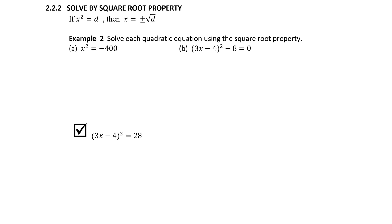One of our easiest and most efficient methods for solving a quadratic equation is found in section 2.2.2: Solve by Square Root Property. This method is fast, it's efficient, it's simple—you're going to love it. The bad news is it doesn't work on every quadratic equation; it only works on a certain subset of quadratic equations that have a special form, but when you notice this form, it's a quick and easy solution.